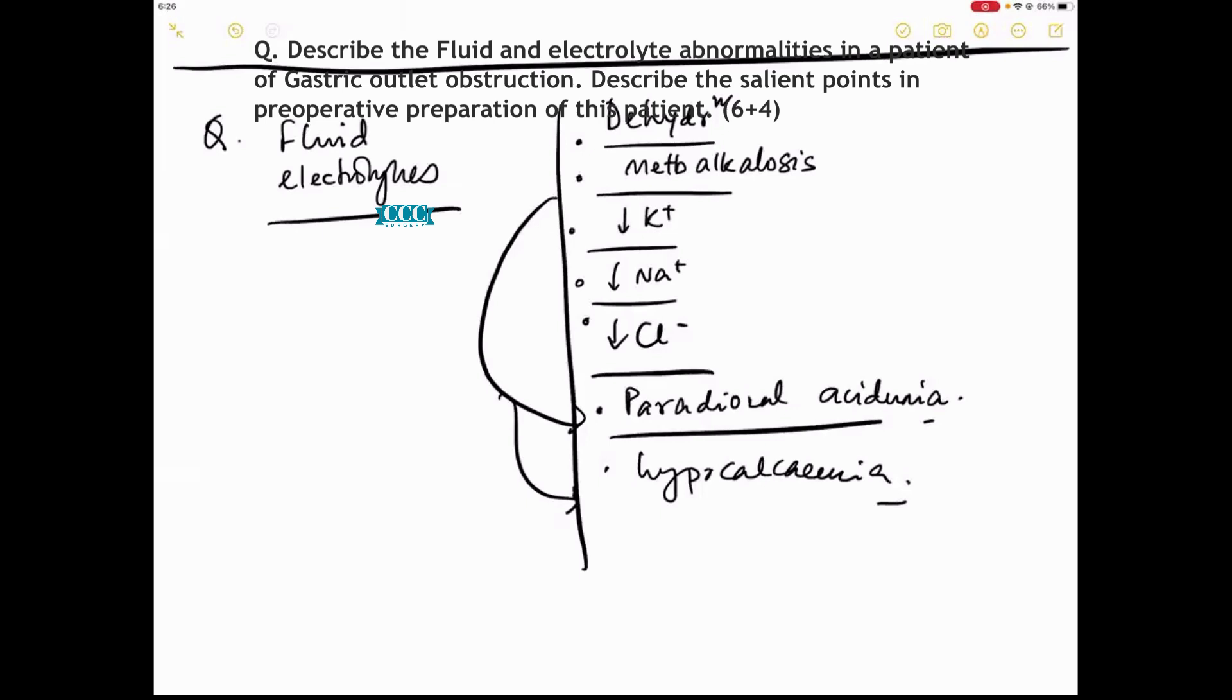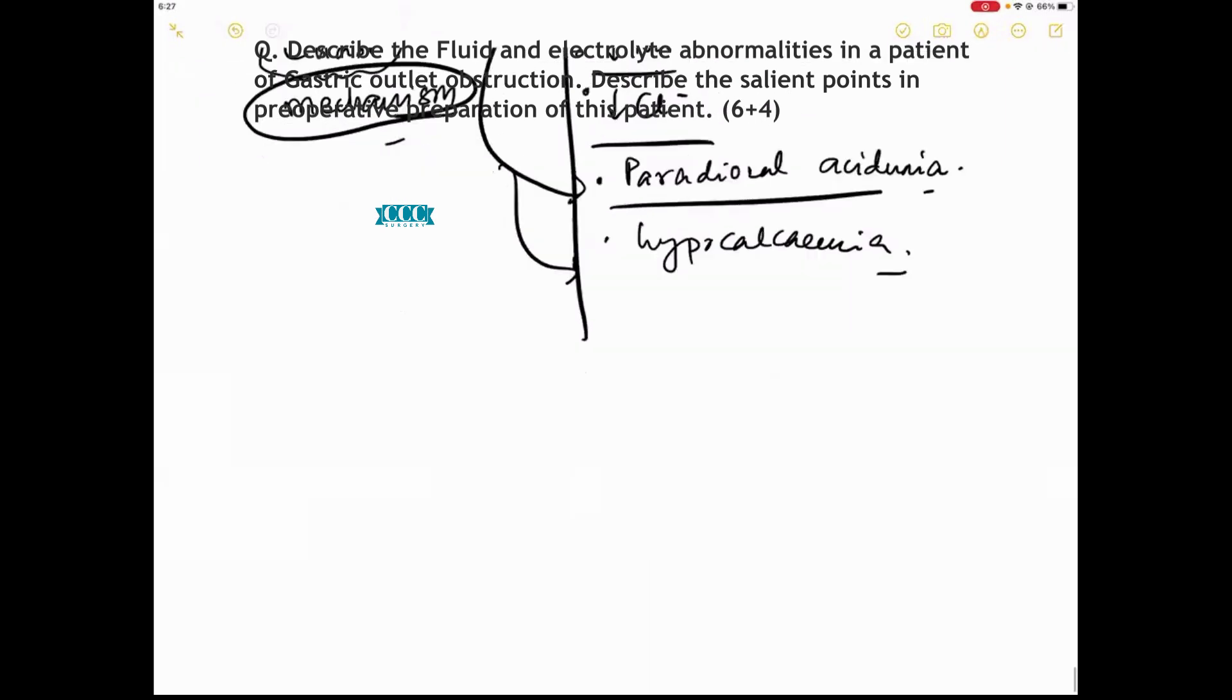You are required to make a chart about the renin-angiotensin mechanism. This has been discussed in the theory in Devakshi's class. Now, what are the important pre-operative preparation points? This is for four marks.